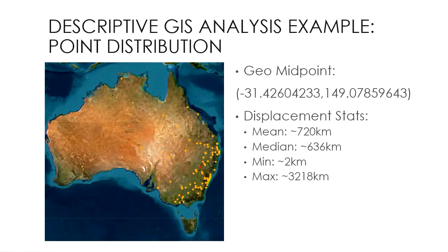A quick practical example: if you're going on a holiday to a city and you know all the attractions and places you want to visit, you could calculate the geo midpoint and look for a hotel around that area. And instead of using straight-line displacement, you can also use actual travel distance, which makes more sense in a lot of cases.